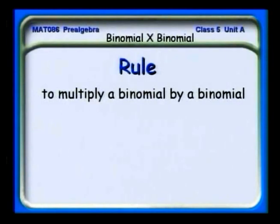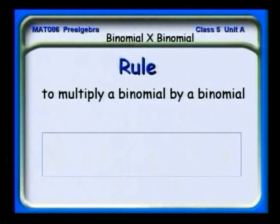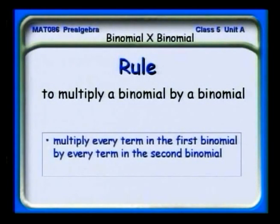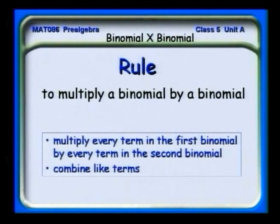Let's see what happens when we multiply a binomial by a binomial. There's a rule for it: we have to multiply every term in the first binomial by every term in the second. When we're finished, we may have some like terms, and we've got to clean that up afterwards by combining like terms.